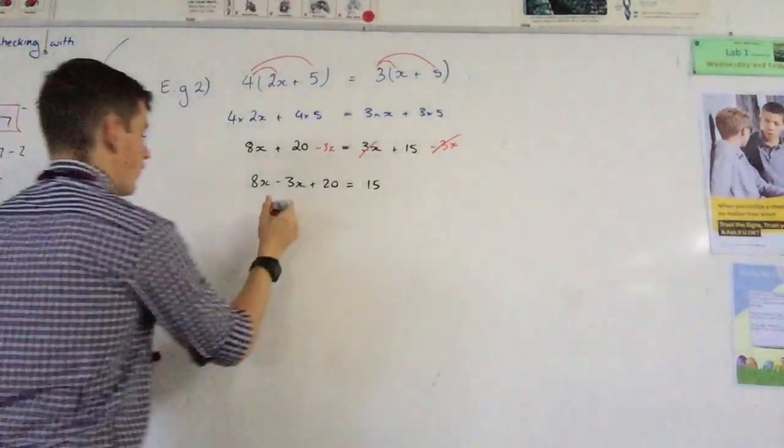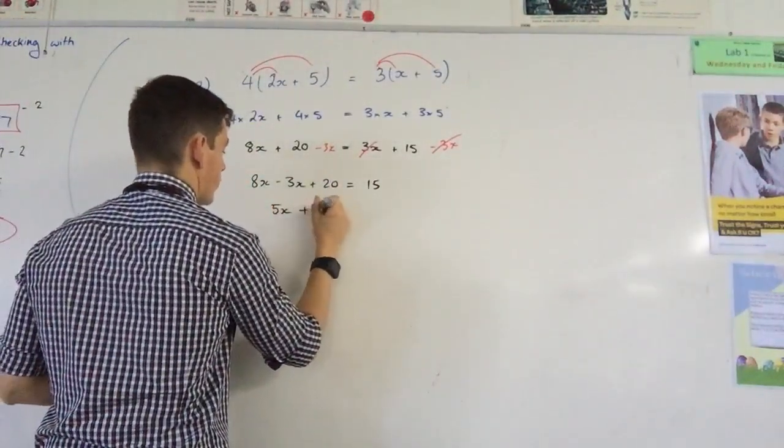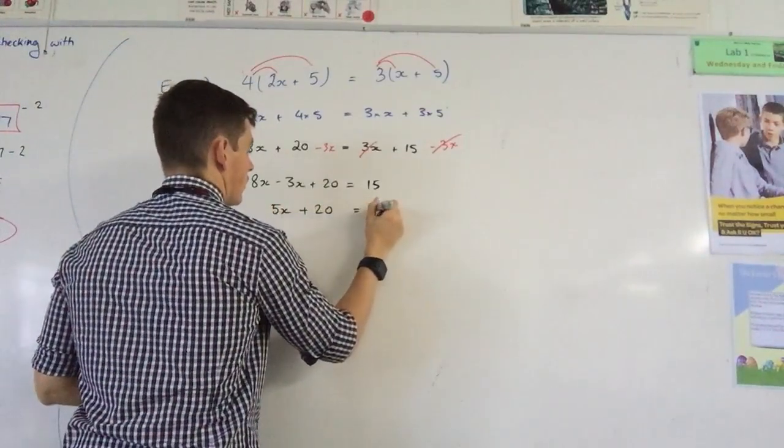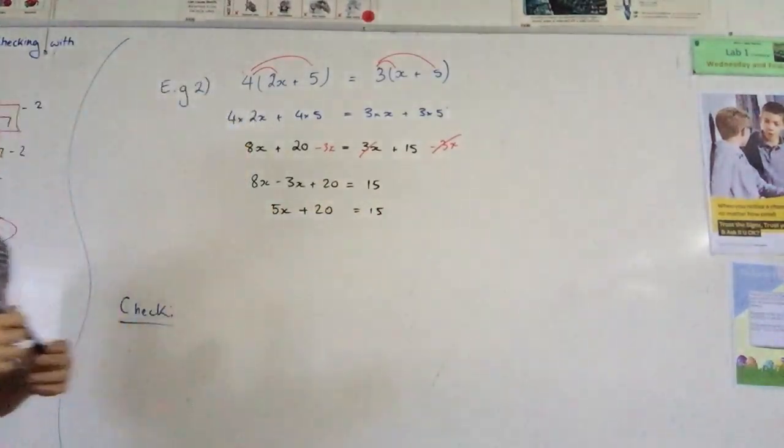That can be written as 5x, 8 minus 3, collecting like terms, 5x plus 20 equals 15.